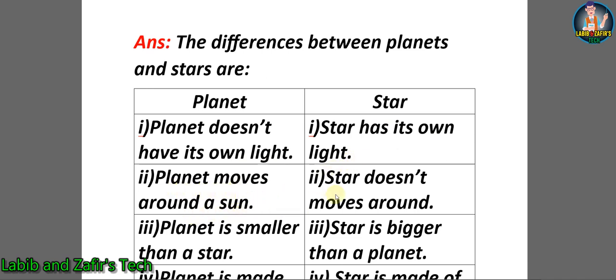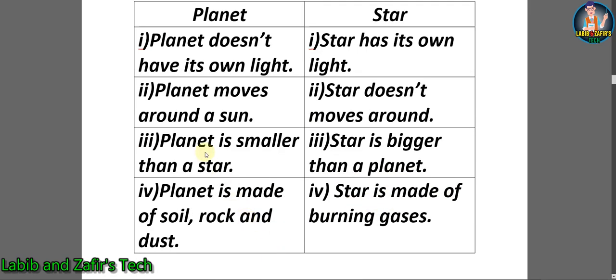Planet is smaller than a star. Star is bigger than a planet. Planet is made of soil, rock and dust. Star is made of burning gases.